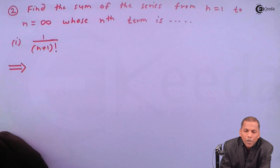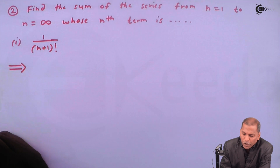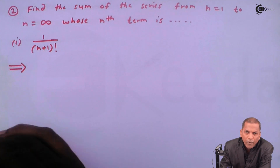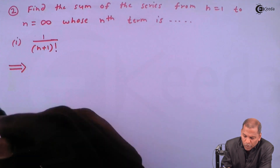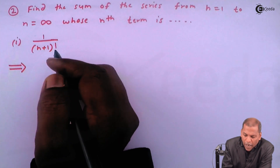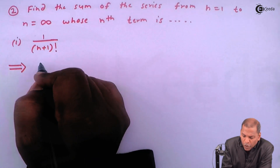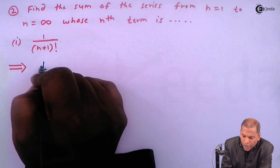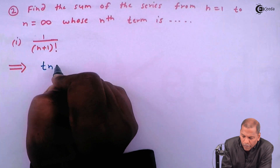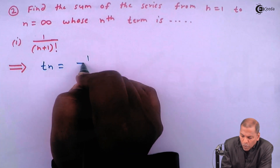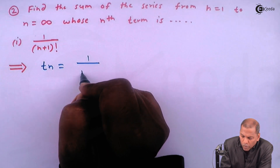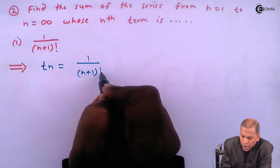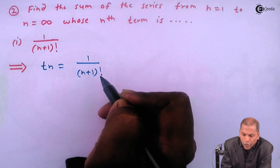Now let's see the solution. In this question, we have given the nth term. So first we write the nth term: t_n is equal to one upon (n plus one) factorial.